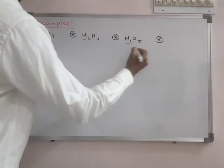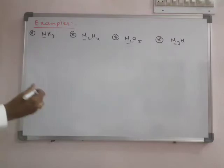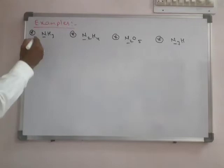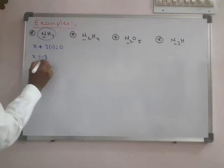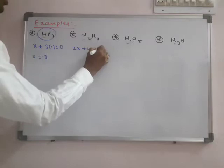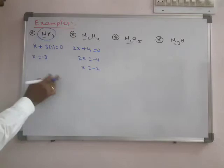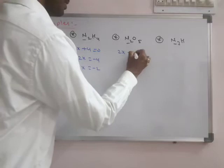We have to find the oxidation number of nitrogen in these compounds. In NH3, nitrogen is x, hydrogen is +1, neutral molecule overall is zero, so x equals minus three. In N2H4: two nitrogen 2x, four hydrogens 4 into +1, overall zero, so x equals minus two — nitrogen is also minus three. Wait, 2x = minus 4, so x = minus 2.